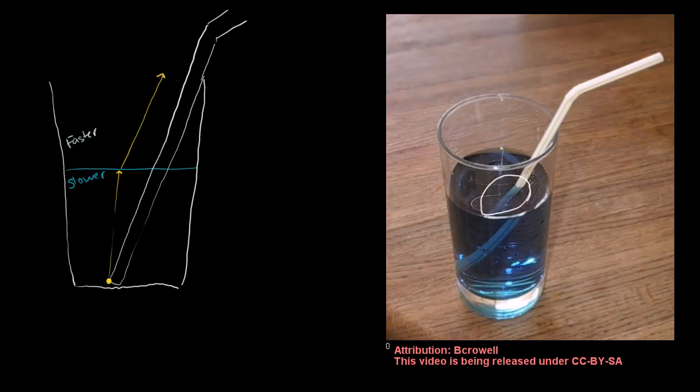Now let me do another ray. So let me do another ray that's coming from that same point. I don't want it to go right along the straw. So another ray just like that. It will also turn to the right.